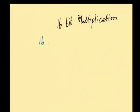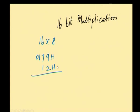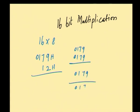I will explain how to multiply 16-bit by 8-bit. Suppose I am taking 0179H, which is multiplied with 12H. The meaning is that 0179H should be added 12 times. So 0179H is added, then the result is again added with 0179H, continued till 12 times.